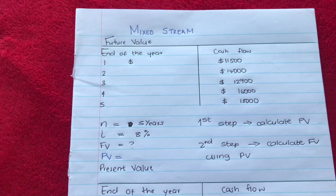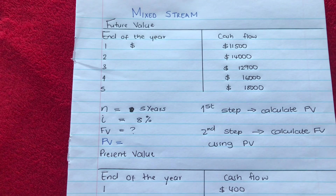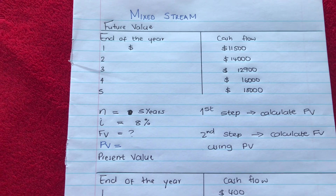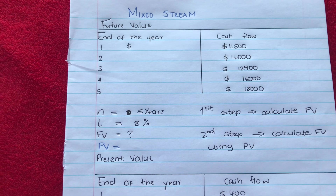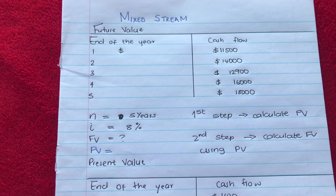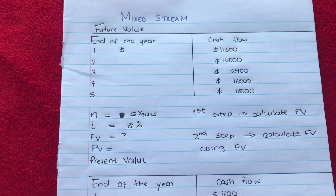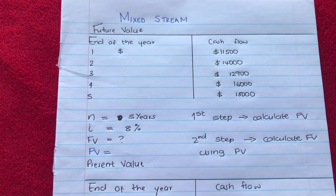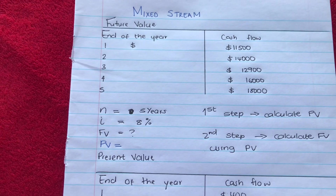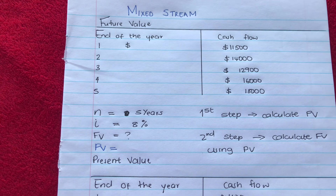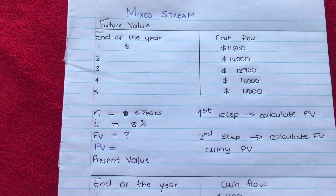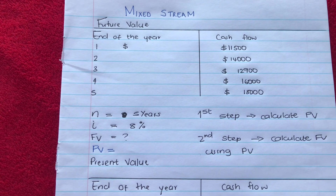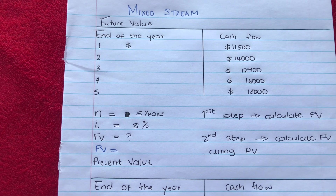On today's video I'm going to do an example for you. If you are going to use the formula, we first calculate the present value for each year, then you add the present values to get the total for five years. After that you look for the future value using the total present values for each year.